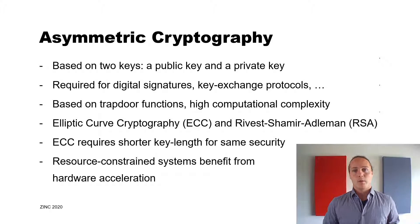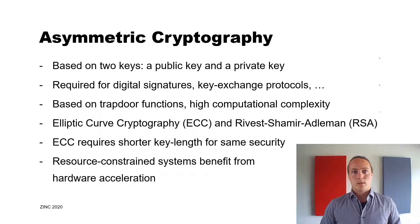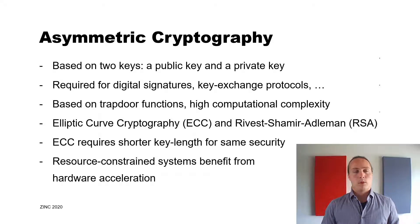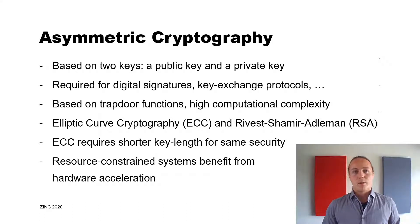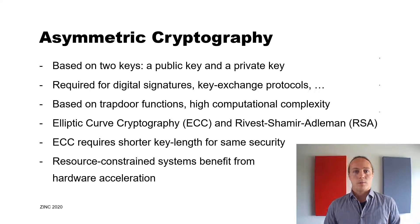I'm going to start off talking about the concepts of asymmetric cryptographic systems. These systems are based on key pairs which consist of a public key and a private key. They are required for digital signatures and key exchange protocols. They are based on trapdoor functions — functions where the inverse is not computable in polynomial time, but even the functions themselves have very high computational complexity. The two main representatives are elliptic curve cryptography and the RSA algorithm, where we focus on elliptic curve cryptography due to the shorter key width required for the same level of security.